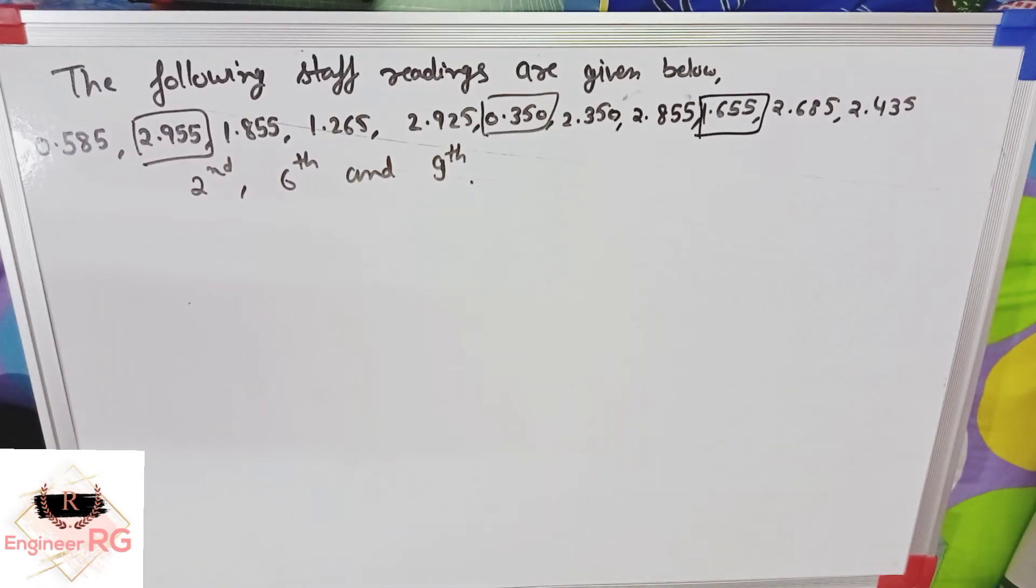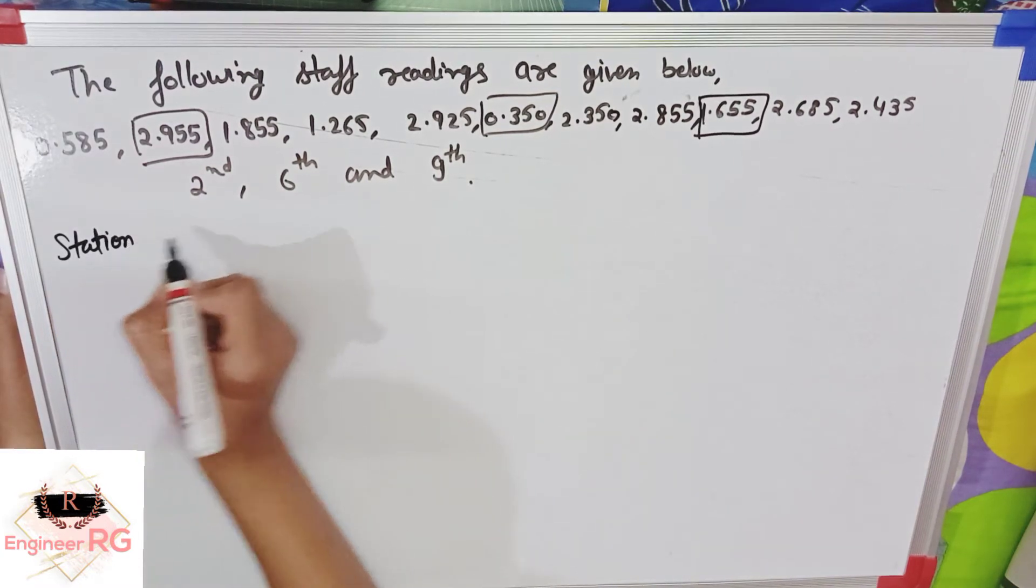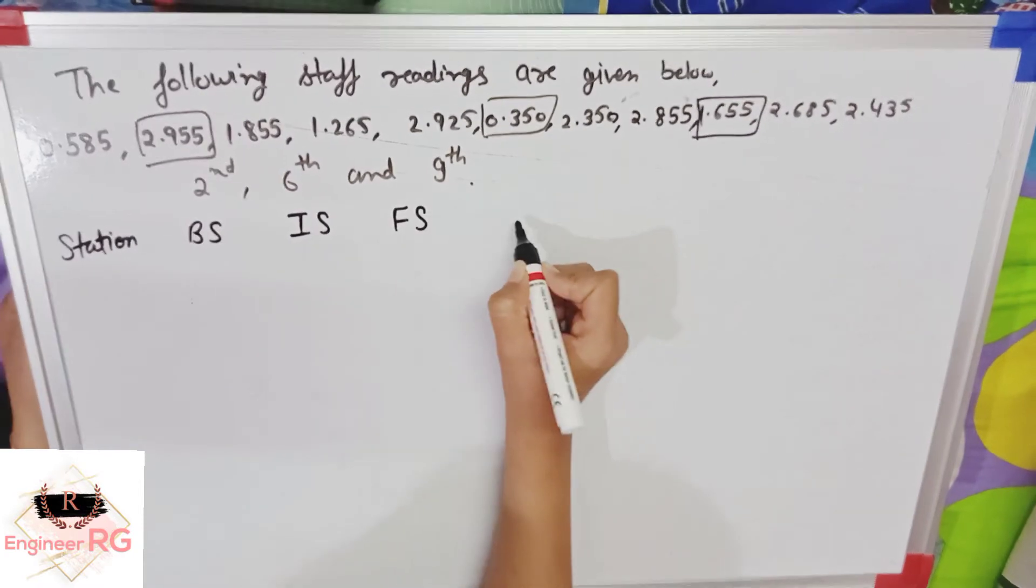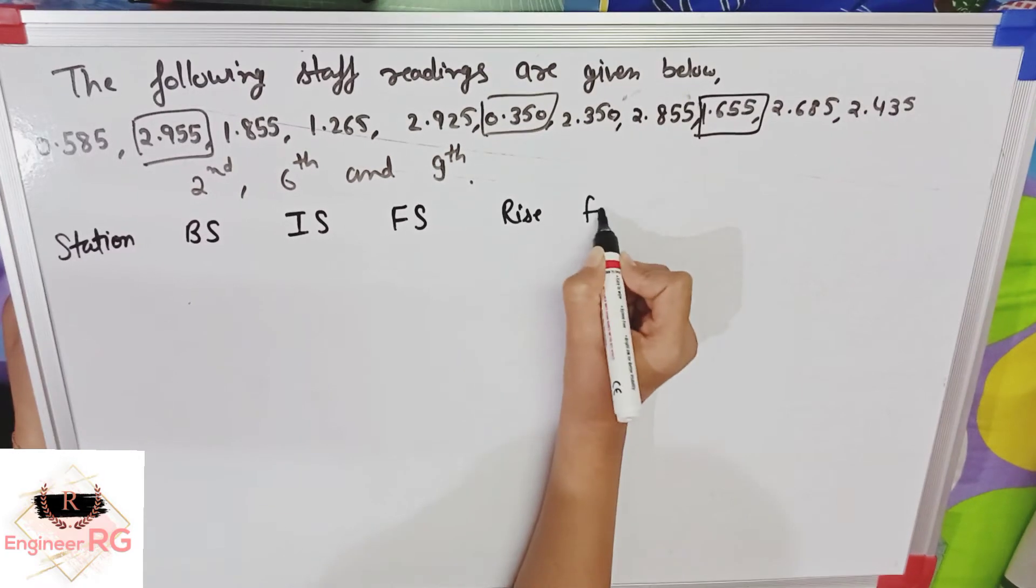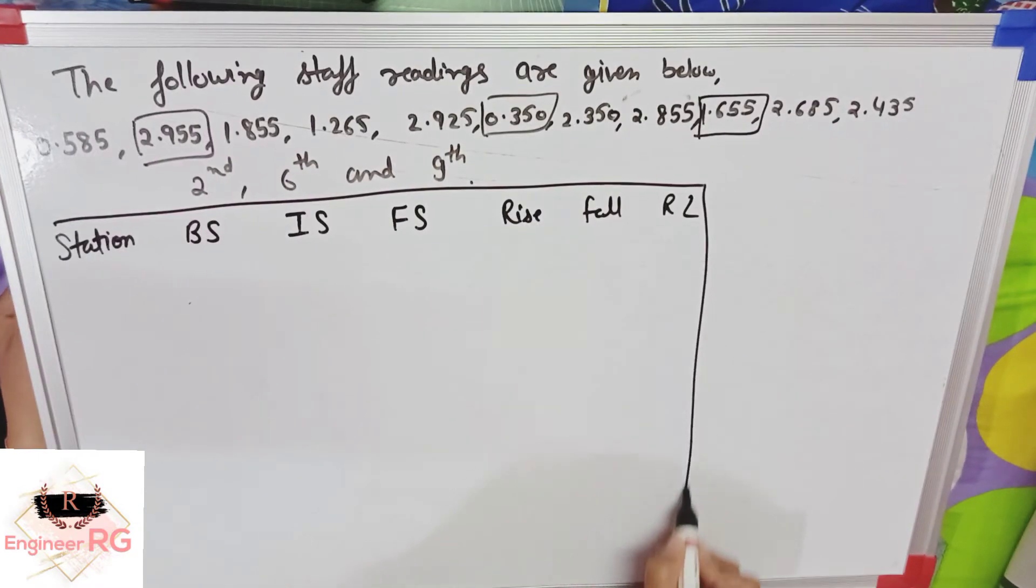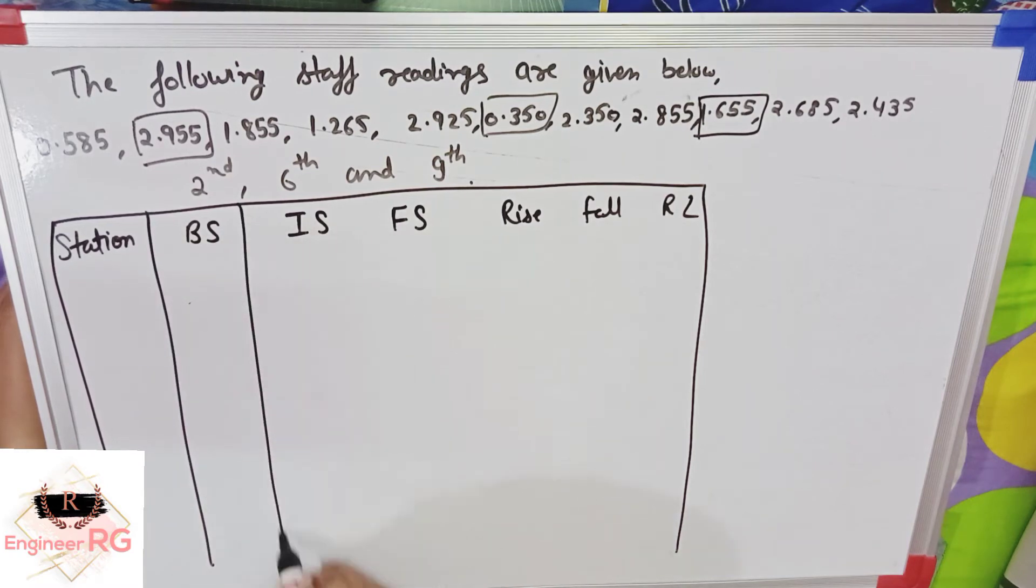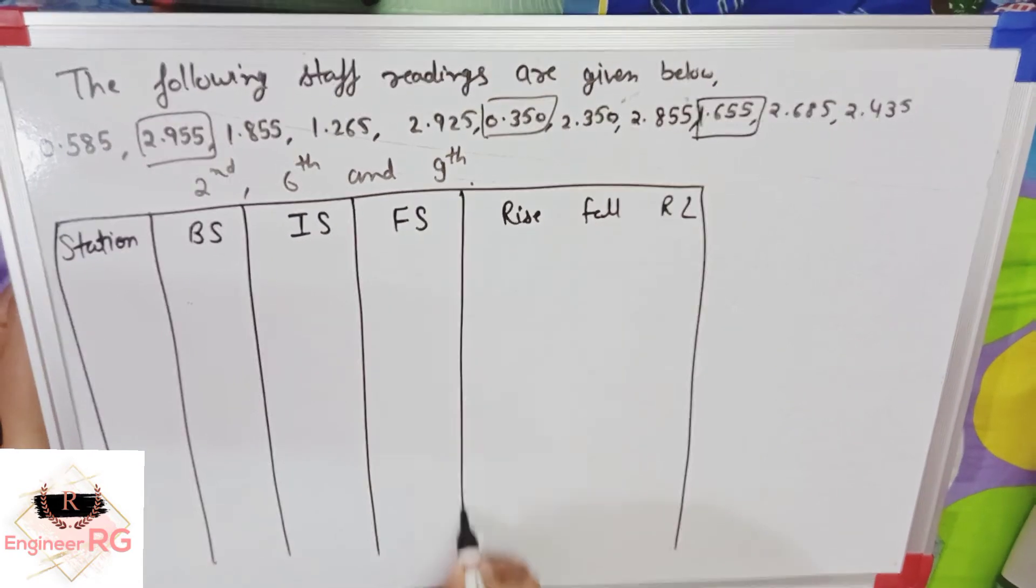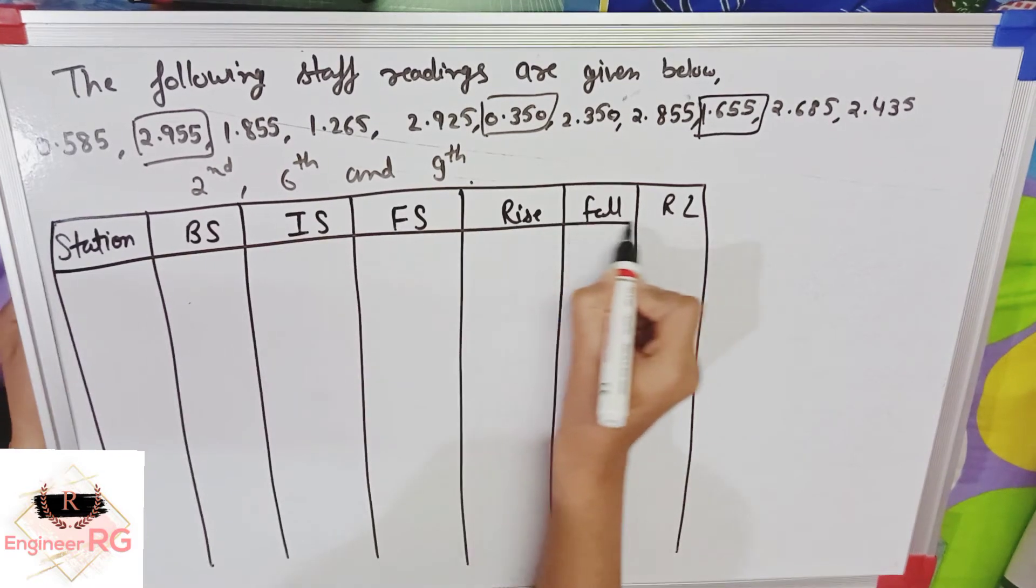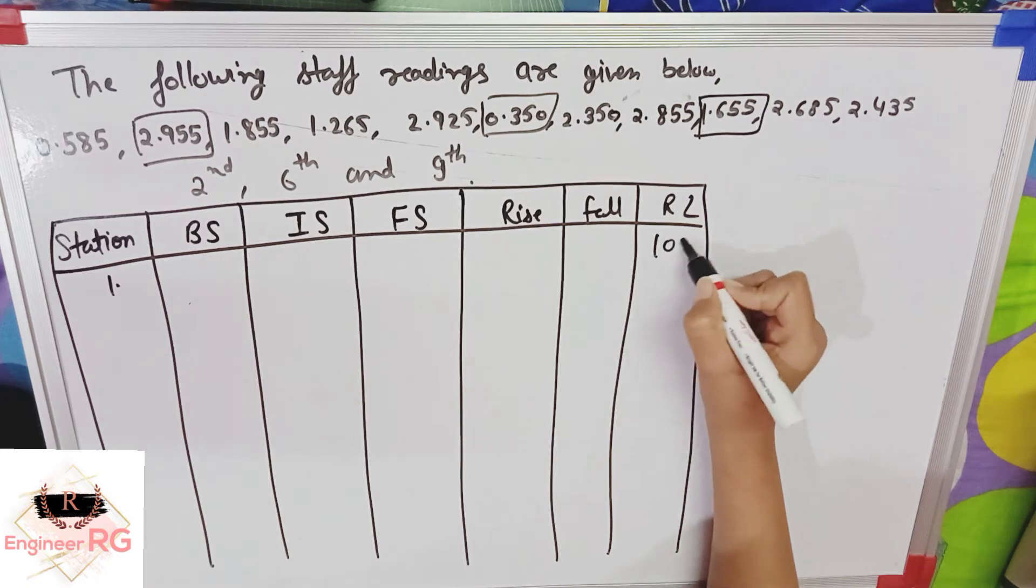Now, let's make a table for solving this question. Let's make a table. Let's do the first registration. Let's write 100.